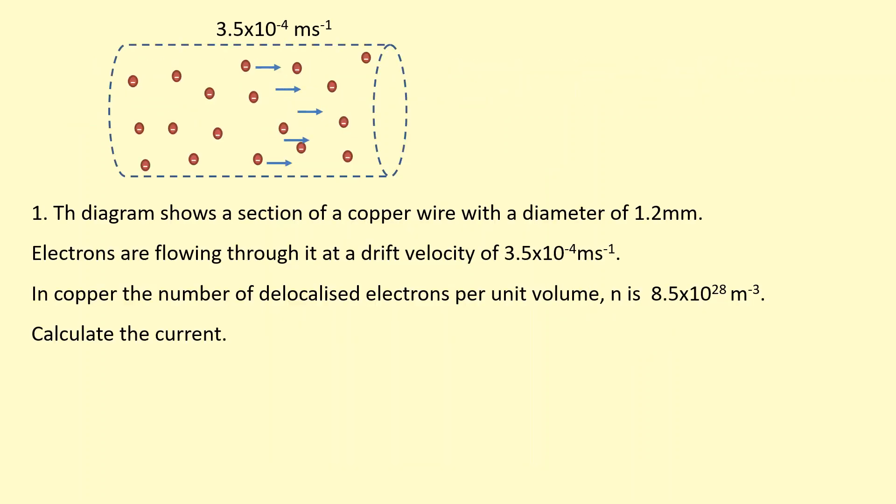The diagram shows a section of a copper wire with a diameter of 1.2 millimeters. I'm going to go ahead and use that to work out the cross-section area, which gives me 1.13 times 10 to the minus 6. Where I've converted it from millimeters to meters, and I've divided the diameter by 2 to get the radius and then squared it.